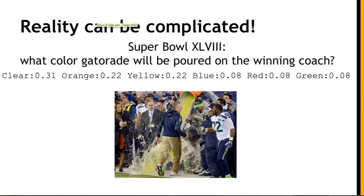Of course in a decentralized prediction market you can't create money out of thin air to pay both parties. You could say orange and yellow both win and each win half the winnings — closing at 0.5 instead of 1. Ideally you'd define your contract more carefully next time, specifying what the first color of Gatorade poured on the winning head coach will be. But the lesson is that no matter how careful you are in defining your market, there can always be some event in reality that wasn't predicted, and it's very tricky to know what to do.